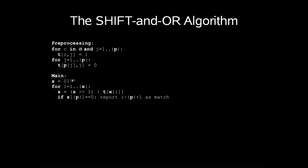Bitwise OR'd on index x[i] in t. If index length of p in s is 0, report i - length of p + 1 as a match.